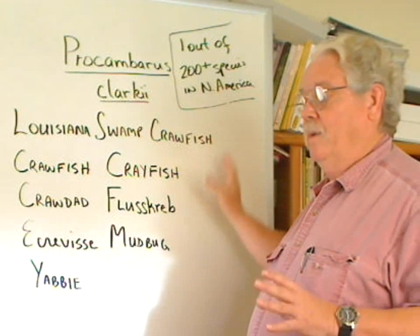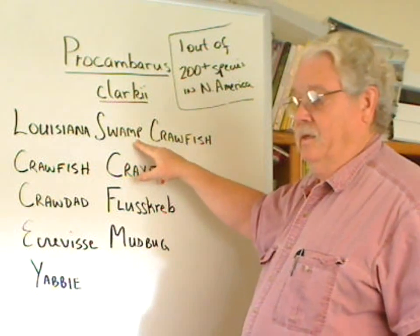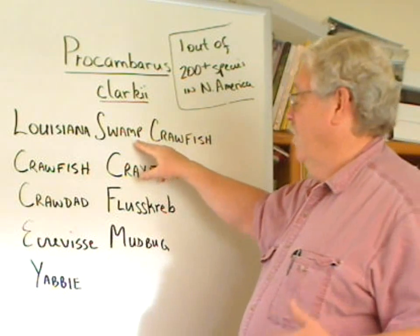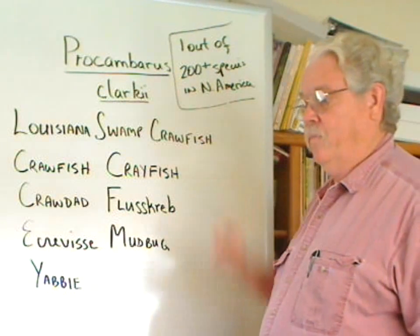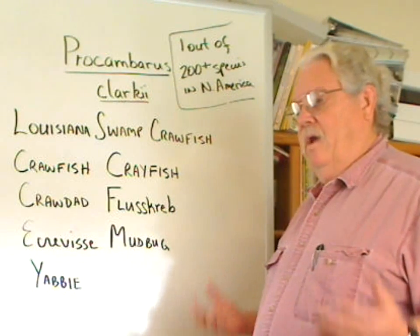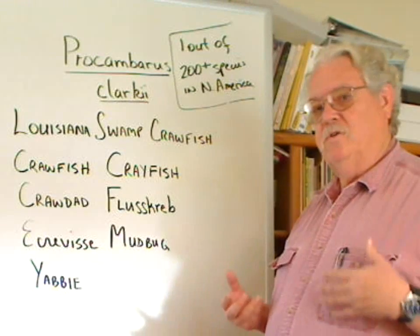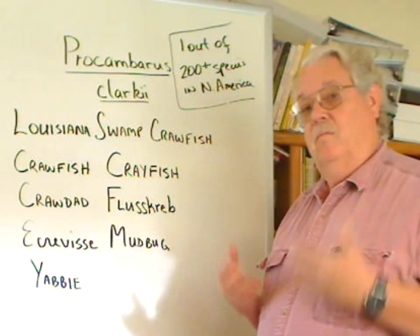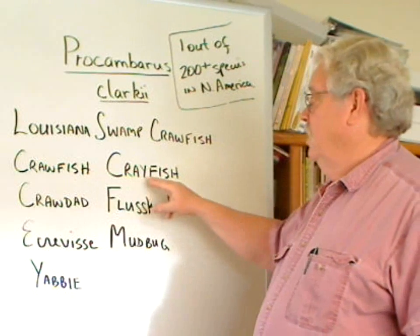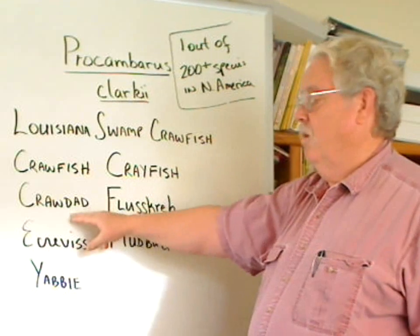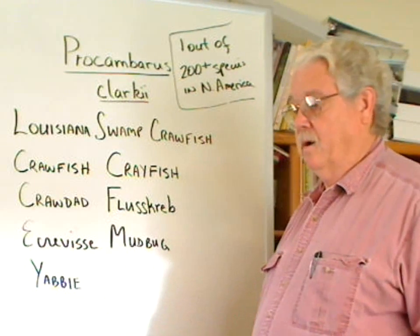Common names can sometimes work because most people, at least in this country that work with crawfish, know what the Louisiana swamp crawfish is. But we have a lot of common names in which an awful lot of crayfish and crawfish species are lumped. These include crawfish, crayfish, and crawdad, very common in usage in North America.